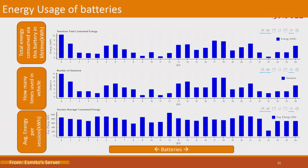These are a few simple things we can do with the data we have. Then we can look at how many times a battery has been used in each vehicle, or how many batteries have been used in one vehicle — all these different combinations we can keep finding out. Then there is the average energy per session of charge-discharge.